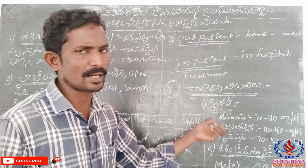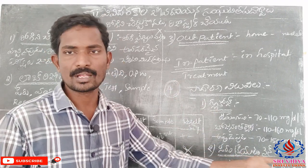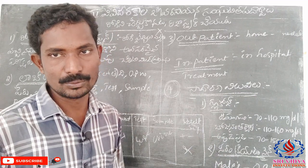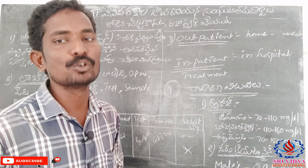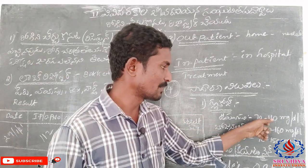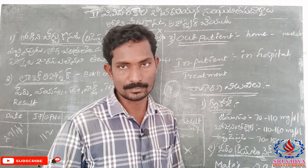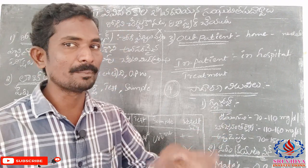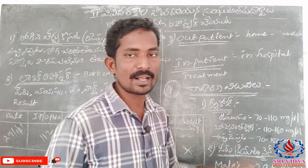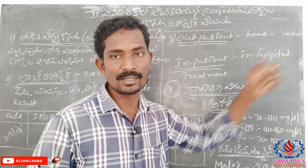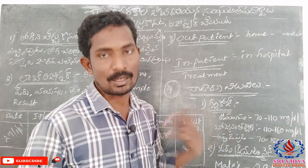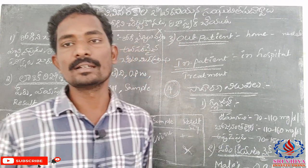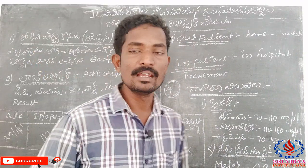The next topic is normal values. Glucose normal value: in the fasting state (empty stomach), the normal value is 70 to 110 milligrams per deciliter. After taking a meal, the normal value is 110 to 160 milligrams per deciliter.